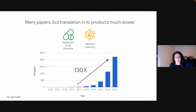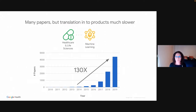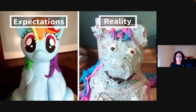But the translation into actual clinical products has been much slower. Given the adoption of ML in consumer-facing products and this explosion in healthcare research, one would expect similar adoption in healthcare — but we have not seen that. So why is there this gap between expectations and reality? We think we've identified a few things; I'll go over three that probably contribute to this gap.